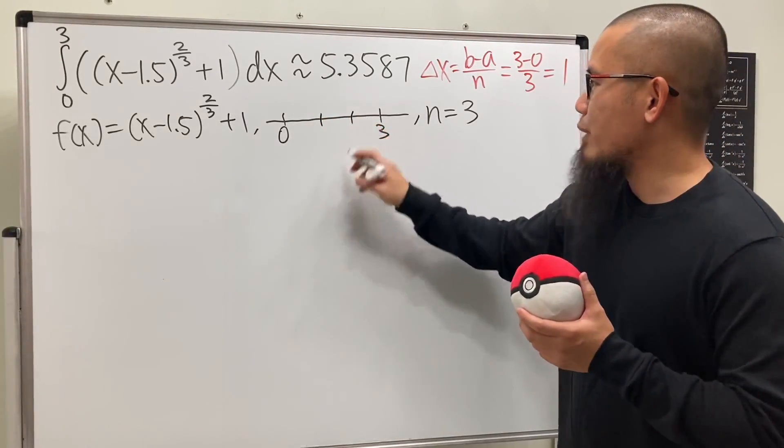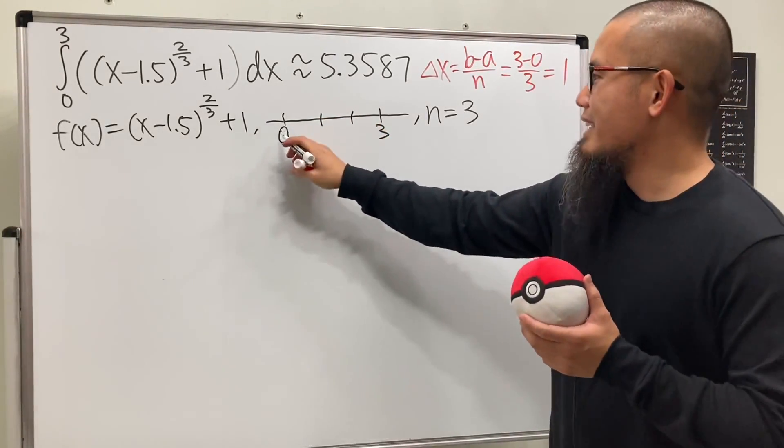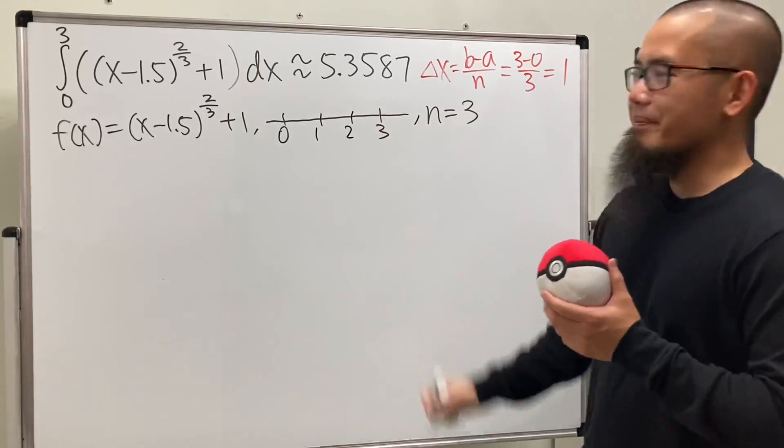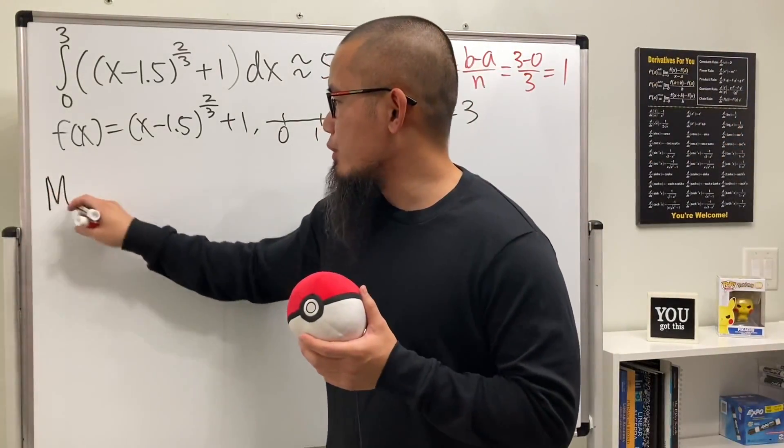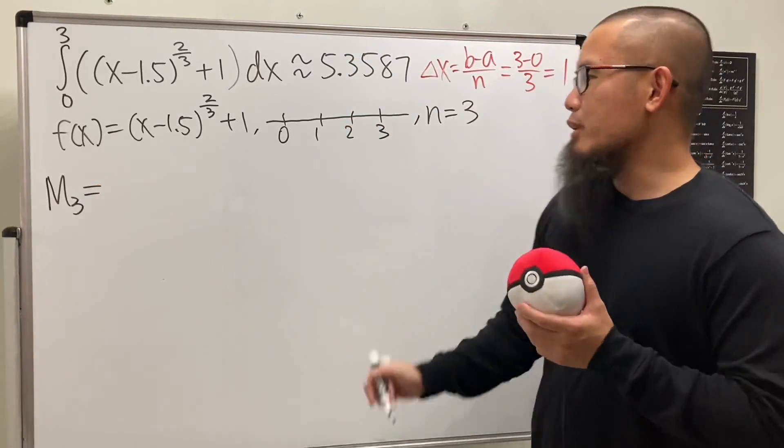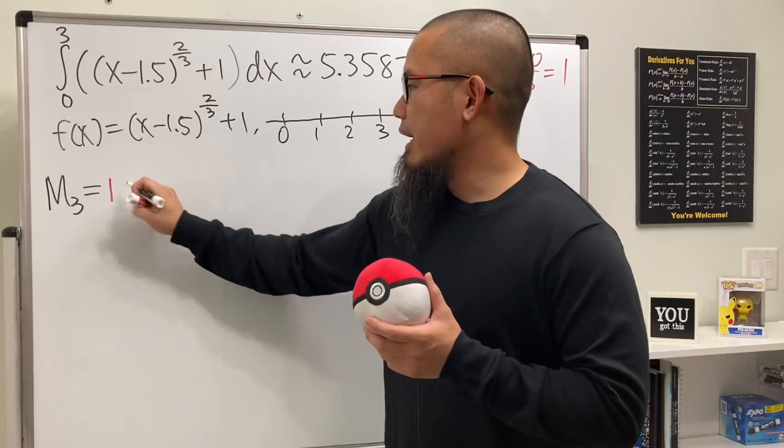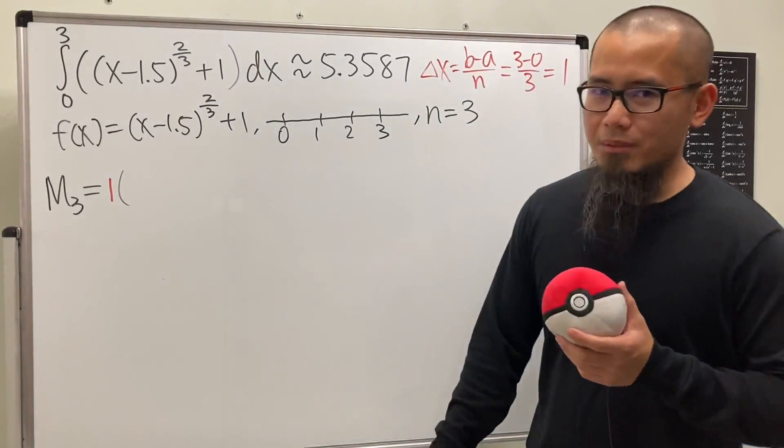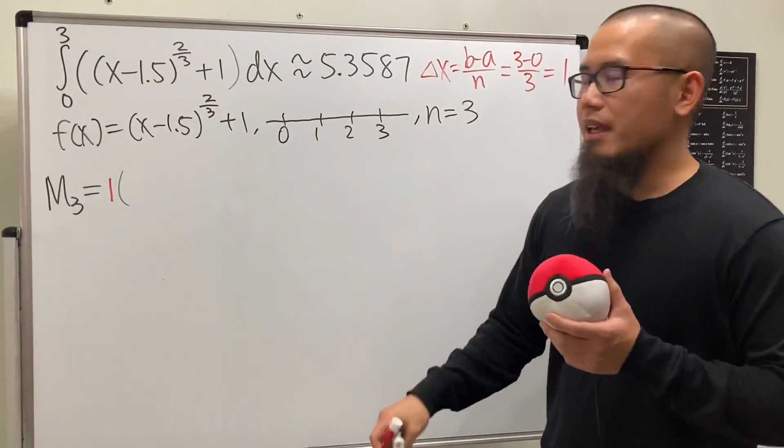We have 0, 1, 2, 3. Let's get started with the midpoint rule M3. First, we will have to use delta x, which is just 1.